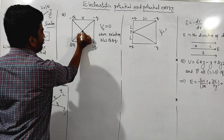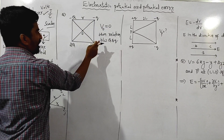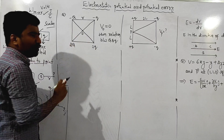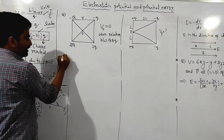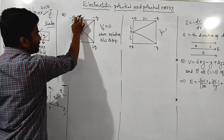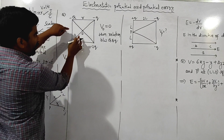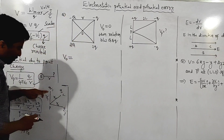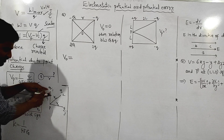A typical exam question: the potential at point E is zero. Four charges are placed. What is the relation between Q and the small q? The point is where the charge is located, and we need to find where the potentials sum to zero.